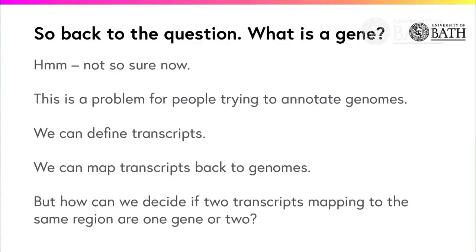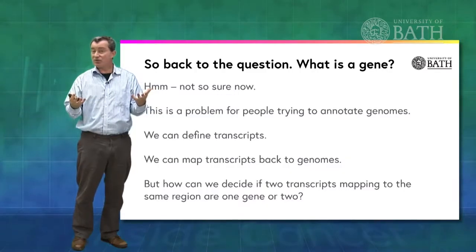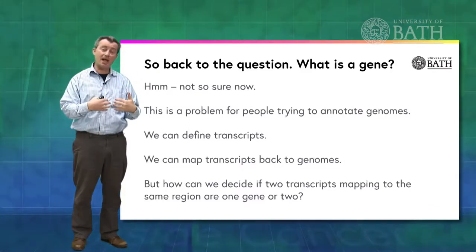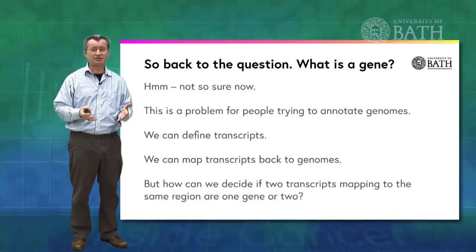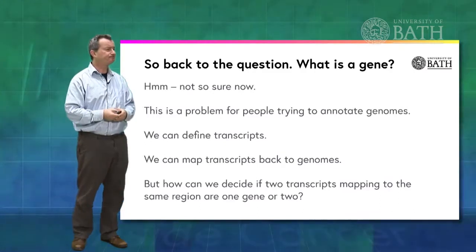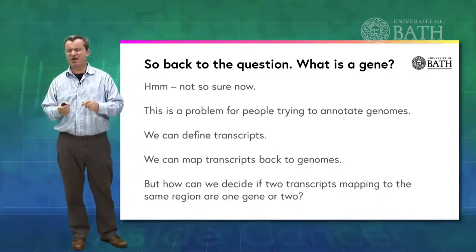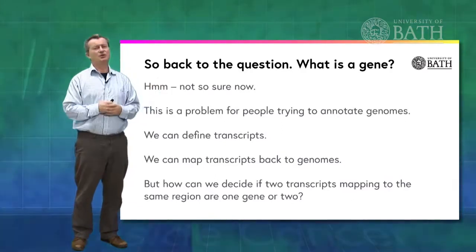So we need to have an understanding of what a gene is to be able to hone in on what the important parts are within genomes and what they might be able to do. Of course, what we can do unambiguously is define transcripts, and this is often our route in. Because we can define transcripts, we can sequence up all the RNAs within a cell. What you can then do is ask: where did those RNAs come from on the DNA? So we can map the transcripts back onto the DNA, back onto the genomes. But we're still left with a problem. Imagine you have two different transcripts that map back to the same bit of DNA — this we find quite regularly. Is that evidence of two genes or one gene? We need to be able to decide.